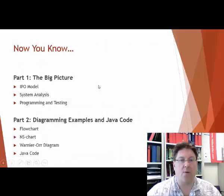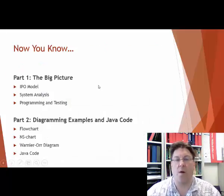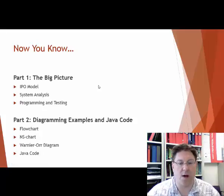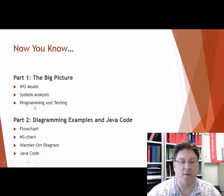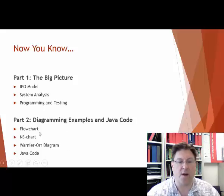Now, so now you understand, basically, what the big picture is, and how to diagram in Java, and what it's going to look like when it actually comes down to the Java code. You should be familiar with IPO model, systems analysis, and really where diagramming fits into the overall process, and then you've seen some examples. So, hope that's been helpful.